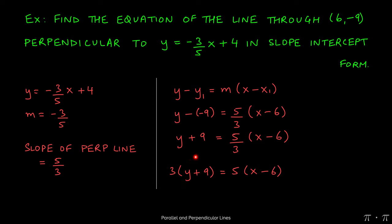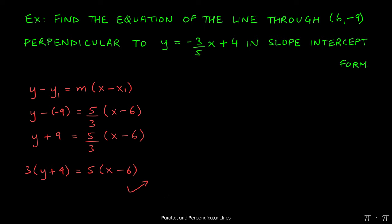We can distribute both the 3 and the 5, which would give us 3y + 27. 3 times y is 3y, 3 times 9 is 27. And then on the other side, 5 times x would give us 5x, 5 times -6 would give us -30.